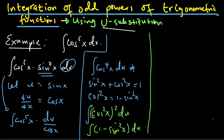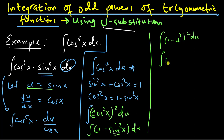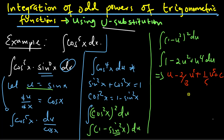Now we know that sin x = u from our substitution. So we have the integral of (1 − u²)² du. Expanding that becomes 1 − 2u² + u⁴ du. We know how to integrate this, so we get u − (2/3)u³ + (1/5)u⁵ + C. Substituting back for u, our final answer is sin x − (2/3)sin³x + (1/5)sin⁵x + C.